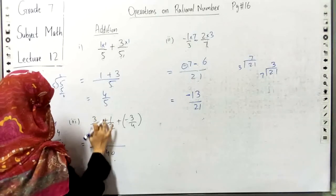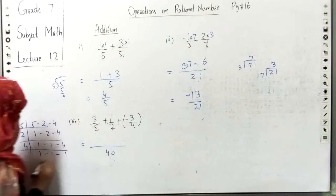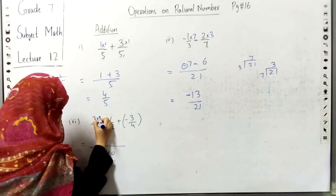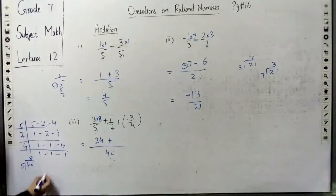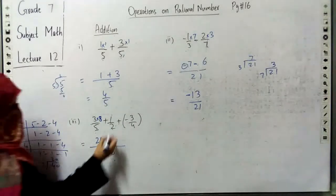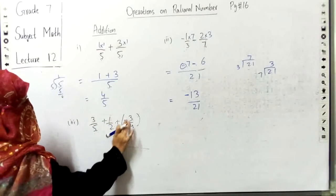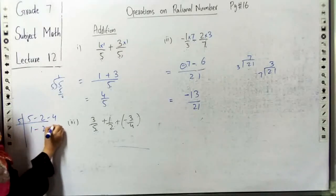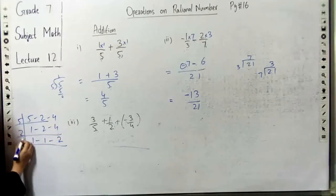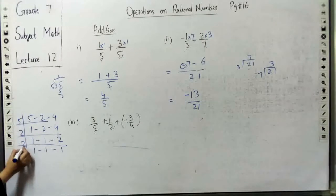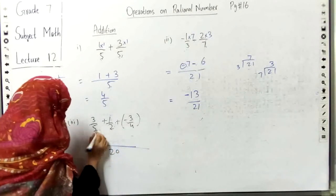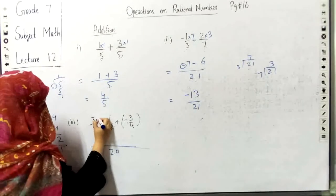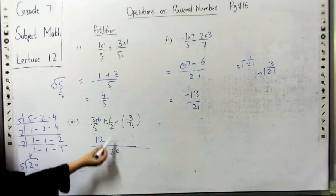5 times 2 is 10, 10 times 4 is 40. So we will have 40. 40 divided by 5 is 8, so 3 multiplied is 24. Then 20 divided by 2 is 10.